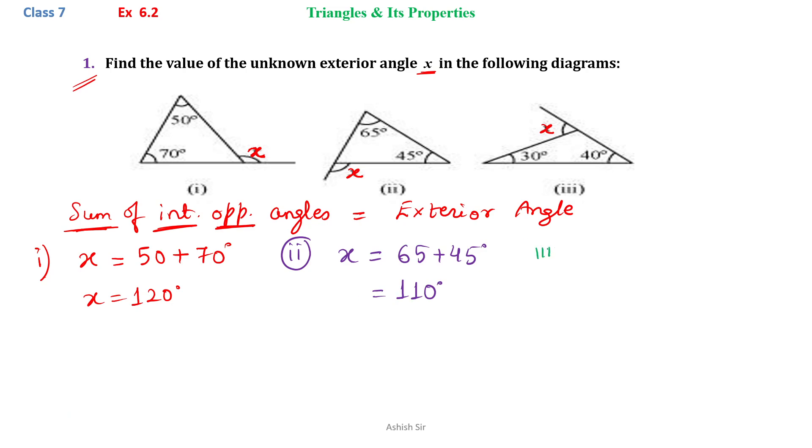In the third part, x equals 30 degrees plus 40 degrees, which equals 70 degrees.